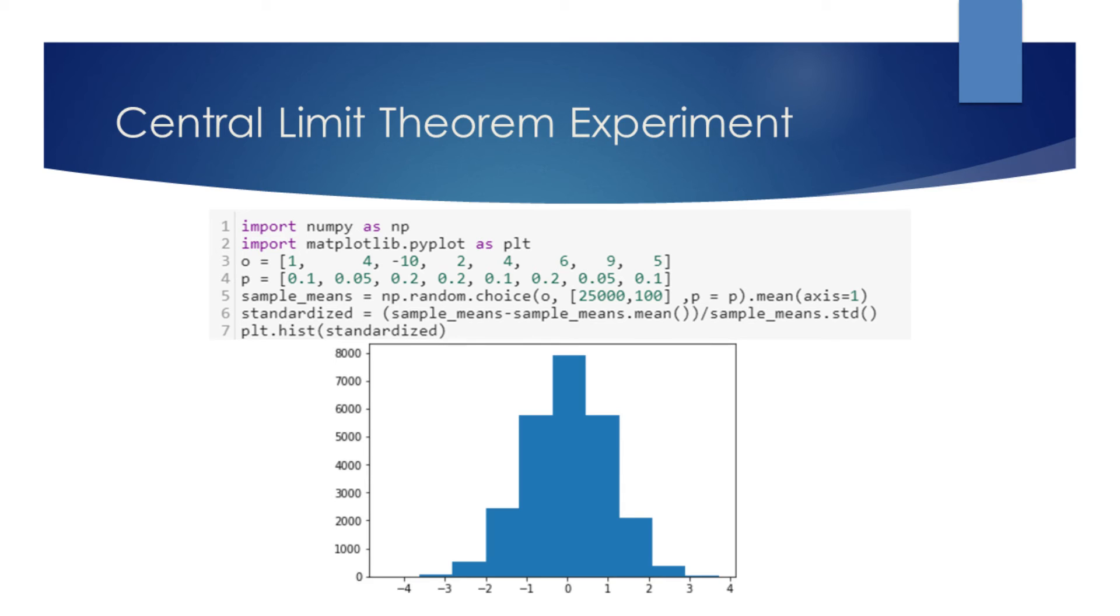On line 5, we will take 25,000 samples containing 100 observations each and find their mean. On line 6, we will standardize the obtained data so that it has zero mean and unit variance. If we now plot the histogram of the standardized means, we will see that it will closely resemble the normal distribution.